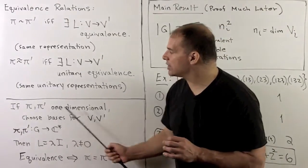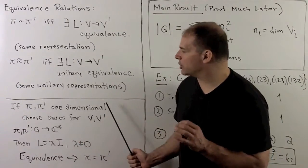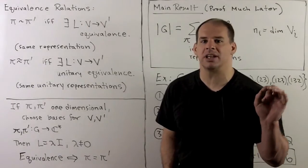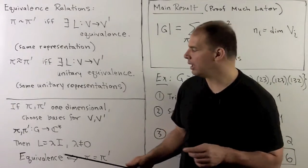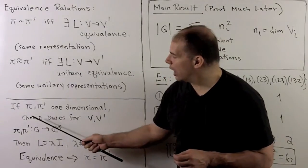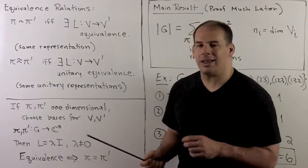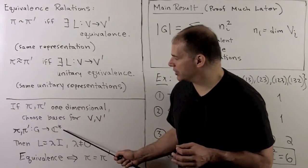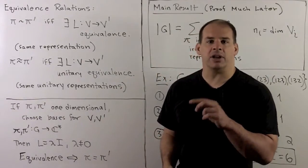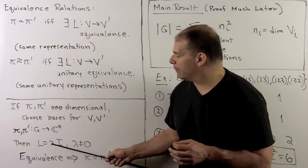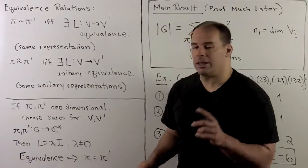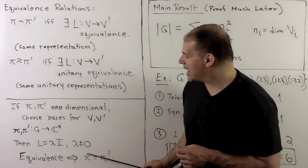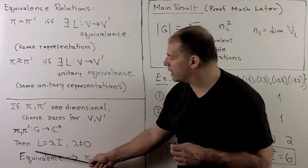Now, if we consider the special case where we have equivalent one-dimensional representations, we'll see that equivalence is the same as being equal as functions from the group to the non-zero complex numbers. If pi and pi prime are one-dimensional, we can choose bases for V and V prime — that means we're looking at homomorphisms from G to C*. If L is an intertwining operator that's also an equivalence, then L is just multiplication by a non-zero scalar. Setting up the definition of intertwining operator, the scalar cancels on both sides and we're left with pi equal to pi prime. So here, equivalence is the same as equals.